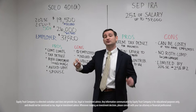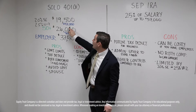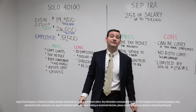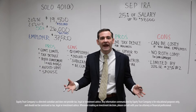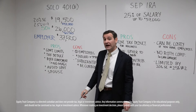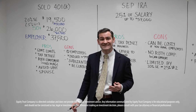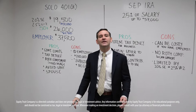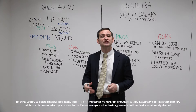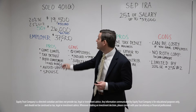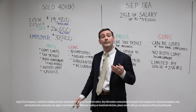Between the employer deferral and the employee contribution, when you are under the age of 50, your maximum allowable contribution to a solo 401k is $57,000. When you're 50 and over, it's $63,500. For those claiming a significant amount of earned income through a business, you can defer well above an IRA contribution. With an IRA, you can contribute up to $6,000 when under 50, or $7,000 when 50 and over. With a solo 401k, you could potentially defer significantly higher amounts.